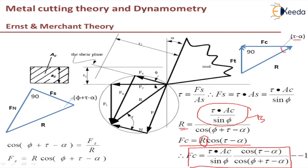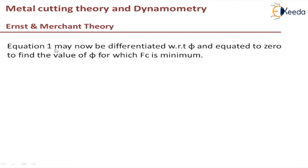In order to get minimum work done, I need to differentiate this equation with respect to phi and equate it to zero so that work done is minimum. Equation 1 may now be differentiated with respect to phi and equated to zero. By that we get phi value equal to pi by 4 minus tau by 2 plus alpha by 2.